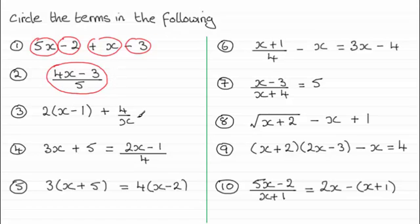With this next expression, you should have had two terms. We've got all of 2 times x minus 1. And then we've got the second term, this fraction here, plus 4 over x.